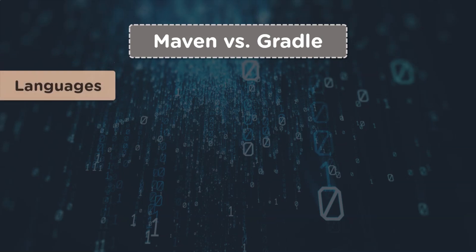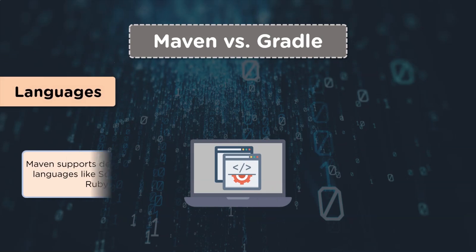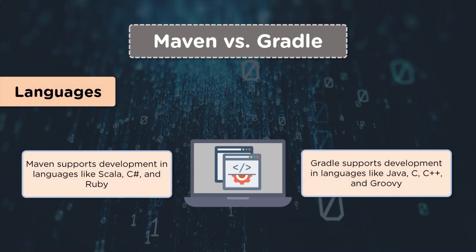The fourth pointer is languages. Maven supports software development in languages like Scala, C# and Ruby. Whereas Gradle supports development in languages like Java, C, C++ and Groovy.